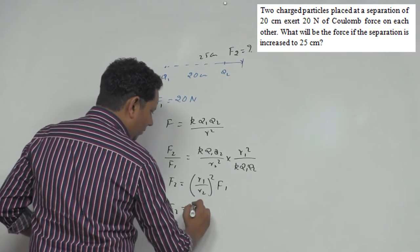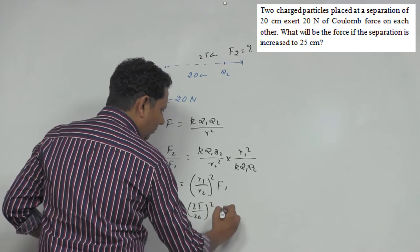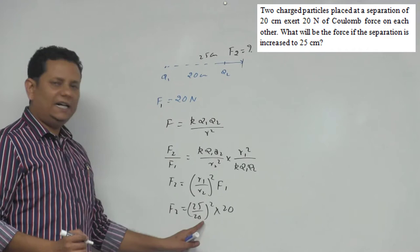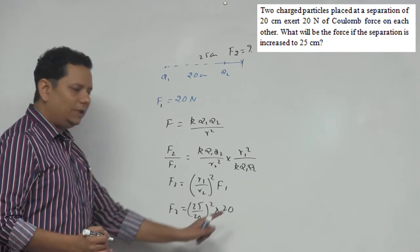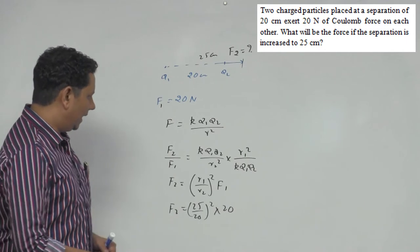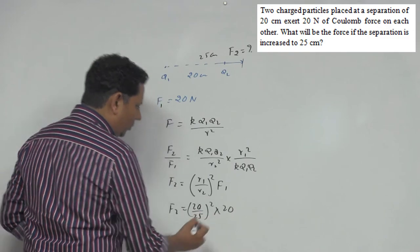Which implies F2 equals 25 divided by 20 squared multiplied by F1, which is 20. Now here, since both are in centimeters, the 10 to the power minus 2 will cancel. This will be 20 divided by 25. All right.